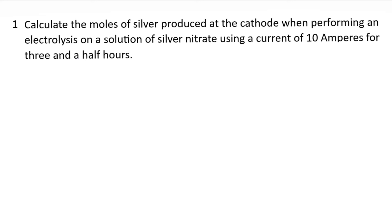Here's our first example. It says calculate the moles of silver produced at the cathode when performing an electrolysis on a solution of silver nitrate using a current of 10 amperes for three and a half hours. First thing we're going to need is our equation which is charge equals current times time. Our charge is in Coulombs, our current in amperes, and our time in seconds. Looking at this question we have amperes and we have our time, it's just not in seconds but we can change that. Faraday's constant is that there are 96,500 Coulombs per mole of electrons.